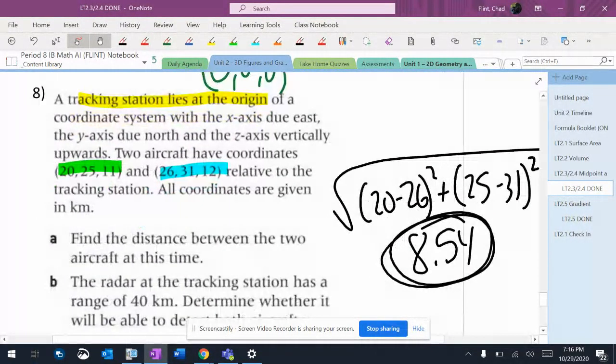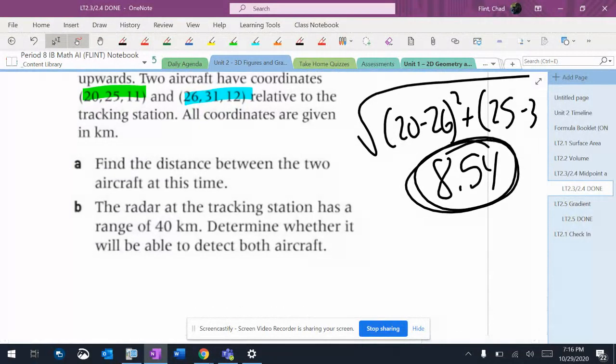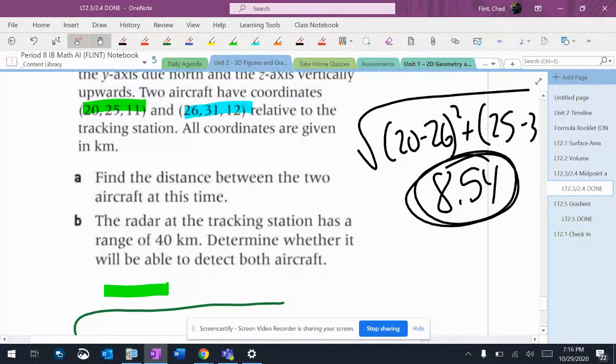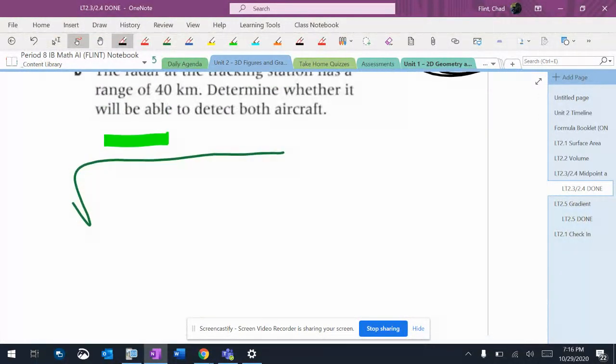If I have to find the distance between these two aircraft, let's find the green one. It's going to be 20 minus zero, which is just going to be 20.